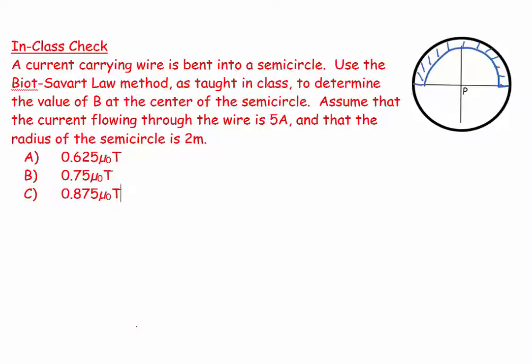Use the Biot-Savart law as taught in class to determine B at the center, at this point P. I want to find out B at P. Assume the current flowing in the wire is 5 amps, so I can say that's going to be 5 amps. And the circle has a radius of 2 meters, so we can say that's 2 meters.